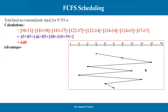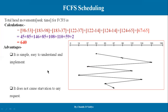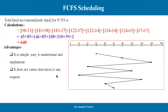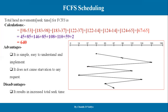The FCFS algorithm has some advantages. Advantage number one: it is very simple, easy to understand, and easy to implement. Another advantage is it does not cause starvation of any request — the starvation problem does not exist because requests are served in sequence. However, a key disadvantage is that it results in an increase in total seek time — the total seek time of 640 is high. Other algorithms will reduce this seek time.